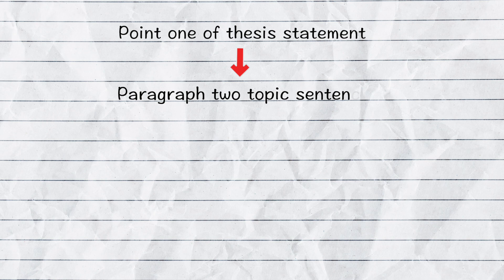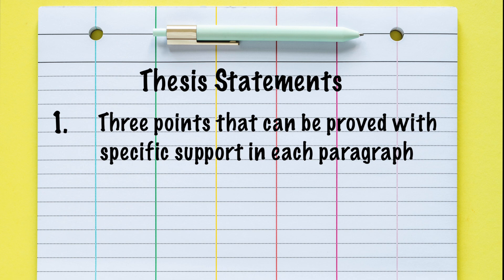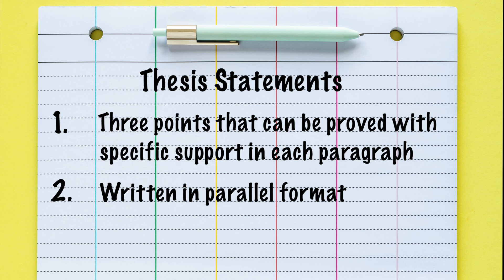Point one of the thesis statement forms the topic sentence of paragraph two. Point two forms the topic sentence of paragraph three. And the strongest, most important point forms the topic sentence of paragraph four. Thesis statements must include three distinct points that you can prove with specific support in each body paragraph.